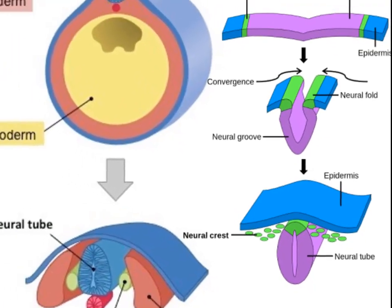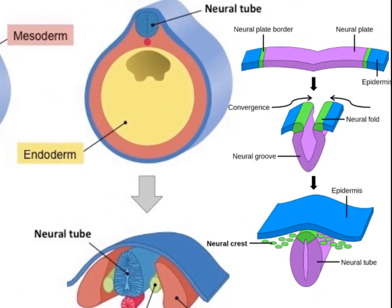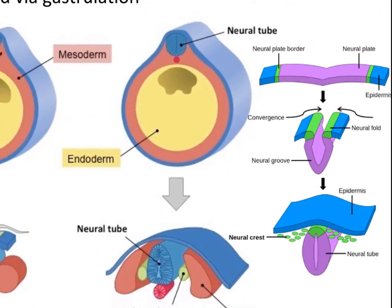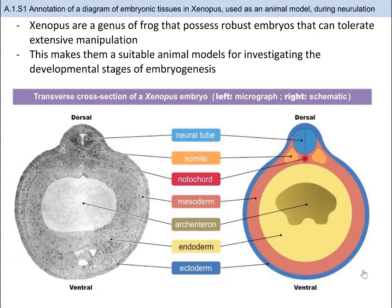The neural tube will elongate as the embryo develops and form the central nervous system — so the brain and the spinal cord. The cells of the neural crest will differentiate to form the components of the peripheral nervous system. One of the skills that you need to know in Option A1 is how to annotate a micrograph of Xenopus, a frog species that are considered model organisms for chordate neural development.